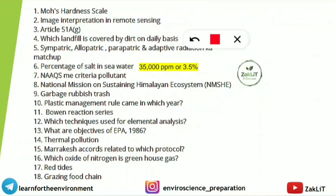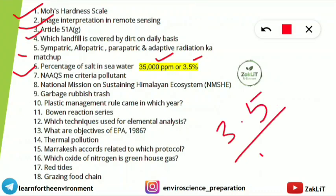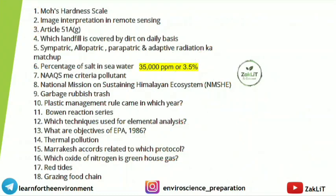Mohs hardness scale was very important — I repeatedly mentioned this in the revision. Questions were from image interpretation and remote sensing, Article 51A on which landfill is covered by dirt on a daily basis, sympatric speciation type matchup from evolution, and percentage of salt in seawater. If the unit is ppm, the answer is 35,000 ppm; if percentage, it is 3.5%; and in decimal form it would be 0.035.